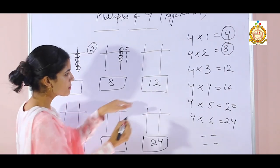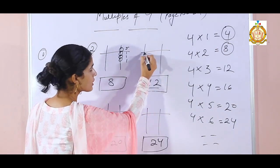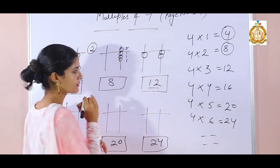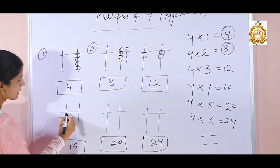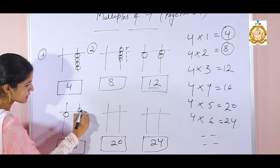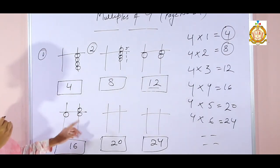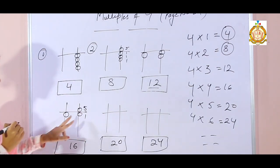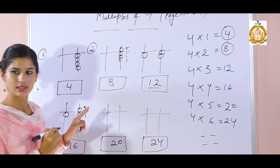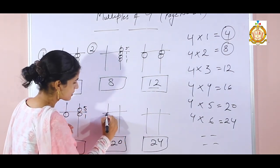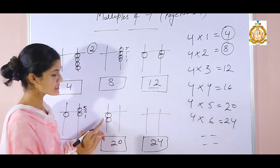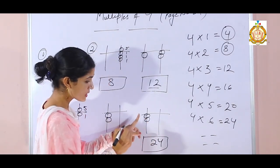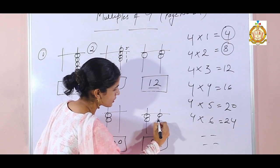Now 12 — it is a 2-digit number, meaning 10 plus 2. For 16: 10 plus 6. Upper bead value is 5 and 1 lower bead is 6, so 10 plus 5 is 15, plus 1 is 16. For 20: 10 plus 10 is 20. For 24: 10 plus 10 is 20, then 4 on the unit place.